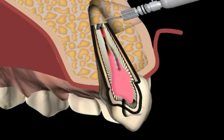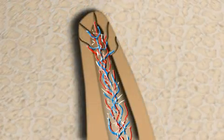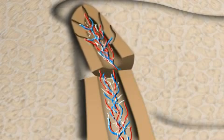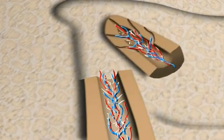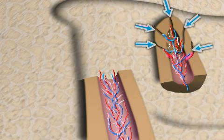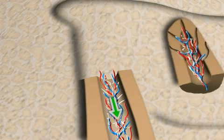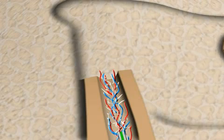By cutting the root tip, all non-refillable side canals — seen blinking here — are removed. The root tip itself often branches out into several single canals, and therefore has only one cleanly filled main canal remaining. The inflammation origin is also removed.